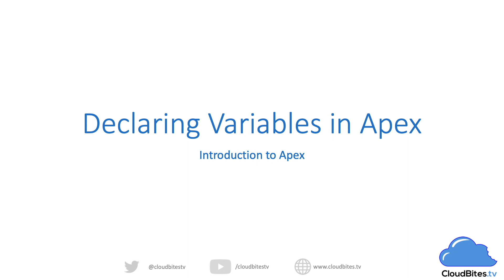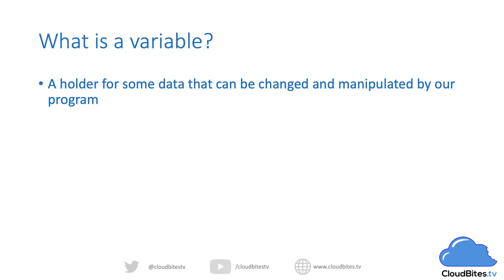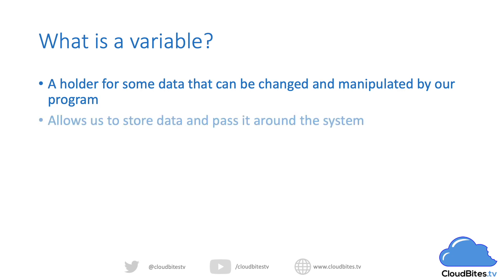Let's start off by talking about what a variable actually is. A variable is a placeholder for some data that can be changed and manipulated by our application or program. For those who've done algebra in school, you'll probably be familiar with the idea of a variable such as x. We might have an equation like 5x equals 10, and then we figure out that x equals 2. You'll also likely have seen functions, like f of x, which defines a graph where x changes. For example, f of x equals 2x, such that when we change the value of x, it changes the output. That's all a variable is in programming — a placeholder for some value we want to store, allowing us to pass it around the system throughout our program.